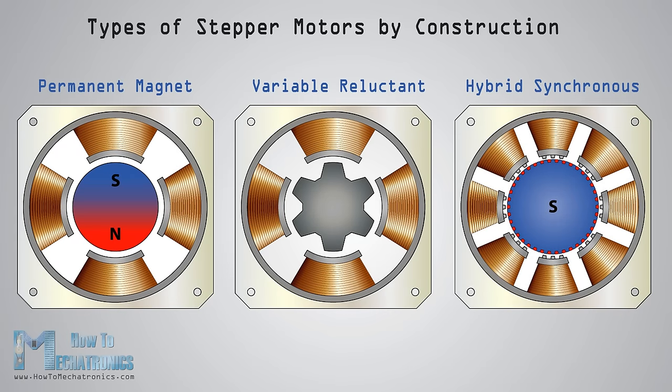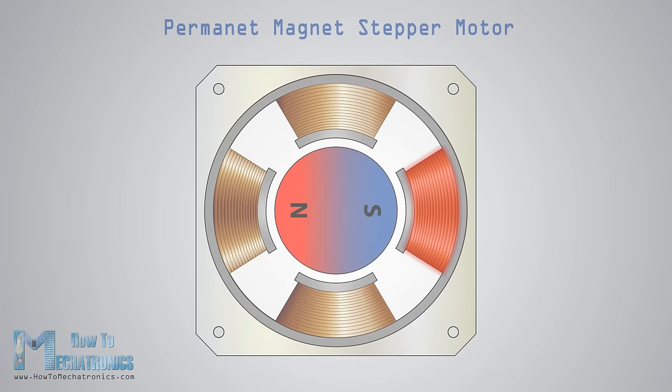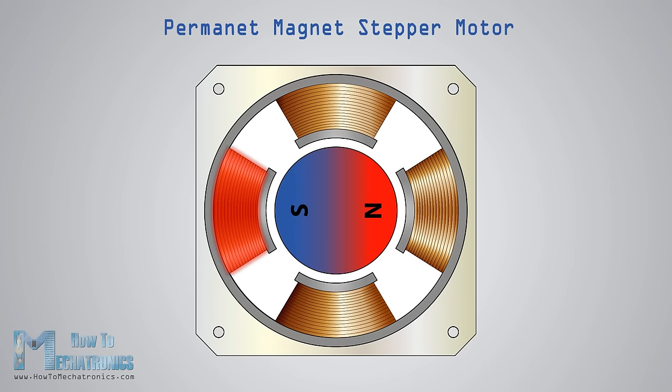By construction, there are three different types of stepper motors: permanent magnet stepper, variable reluctant stepper, and hybrid synchronous stepper motor. The permanent magnet stepper has a permanent magnet rotor which is driven by the stator's windings. They create opposite polarity poles compared to the poles of the rotor, which propels the rotor.